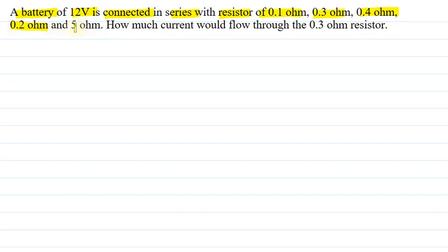So a battery of 12 volt is connected in series with the given resistors: resistance of 0.1 ohm, 0.3 ohm, 0.4 ohm, 0.2 ohm and 5 ohms. How much current would flow through the 0.3 ohm resistor? Let us see the answer for this question.